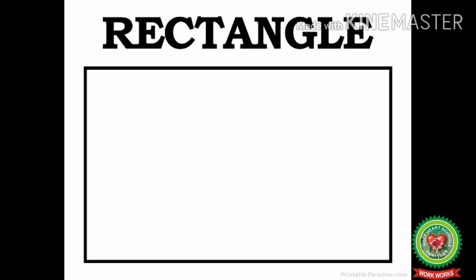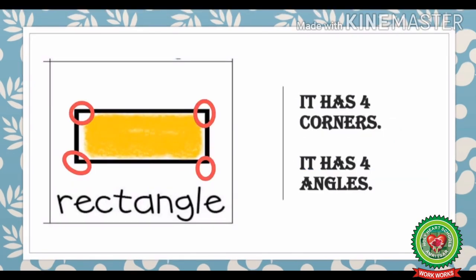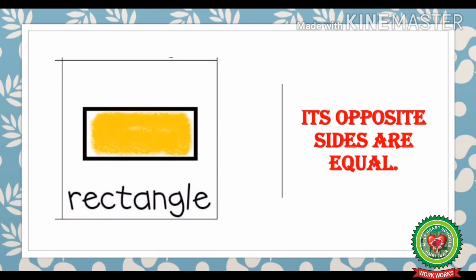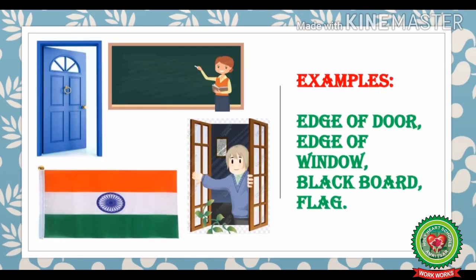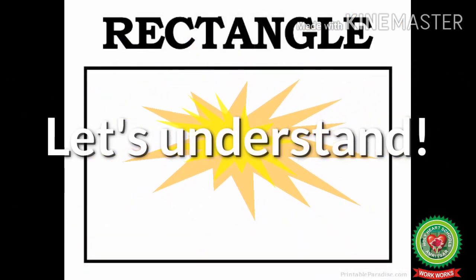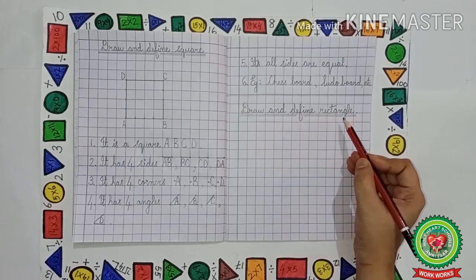Now let us learn about rectangle. It is a rectangle. Just like square, it also has four sides, four corners, four angles, and its opposite sides are equal. There are many examples of rectangle like edge of door, edge of window, blackboard and flag. Now let us understand it more clearly and see how to draw and define a rectangle.